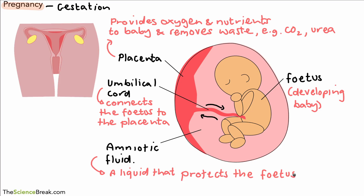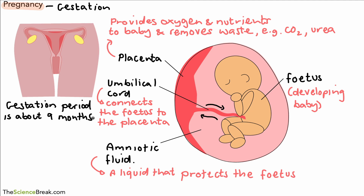So these are the key parts that we need to know and remember. The other thing is just a note about gestation. Gestation is the time that the baby is in the womb while it's developing, and the gestation period is about nine months — it can be a little bit more or less, but about nine months in general.